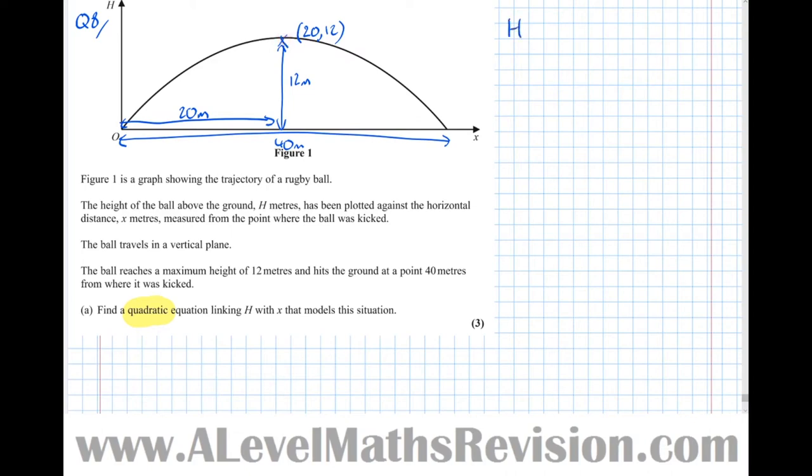So we know that h equals k times x plus a squared plus b. Because we know the coordinates of the vertex are 20, 12, this means that it's equal to k times x minus 20 squared plus 12.